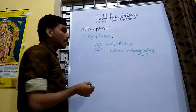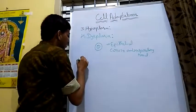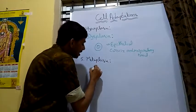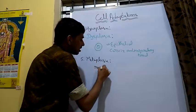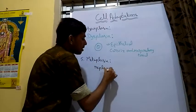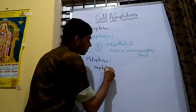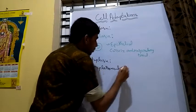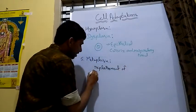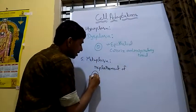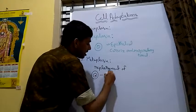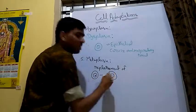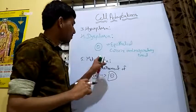Next, we move to metaplasia. Metaplasia is the condition that involves replacement of one type of cell by another type of cell. A normal cell is replaced by another type of cell. This is called metaplasia.